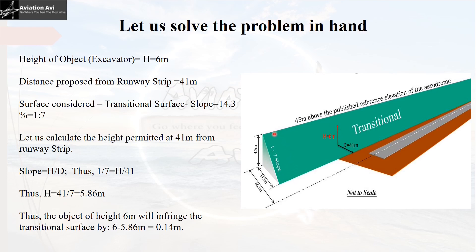The transitional surface has a slope of 1:7, that is 14.3%, and extends up to a height of 45 meters where it touches the inner horizontal surface. The problem: height of the object is 6 meters, the distance proposed from the runway strip is 41 meters, and the surface being considered is the transitional surface with a slope of 14.3% (1:7). Let us calculate the height permitted at a distance of 41 meters from the runway strip. Since slope = height / distance: 1/7 = height / 41, which gives a permitted height of 5.86 meters.